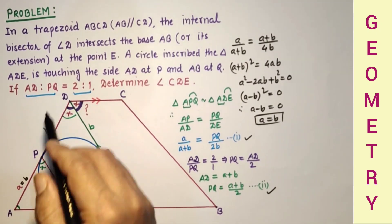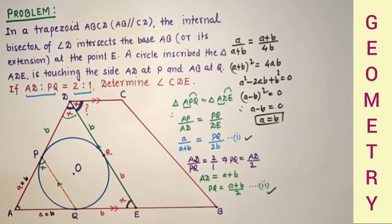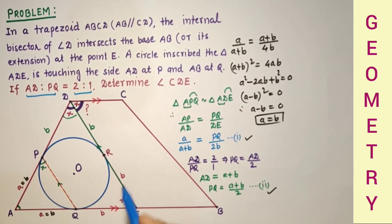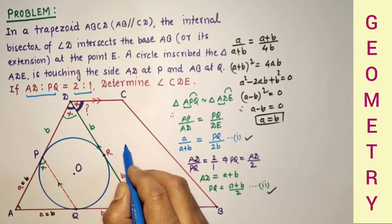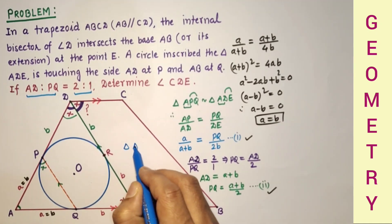Therefore, triangle ADE is an equilateral triangle. We found all three sides are equal and each is equal to 2B.